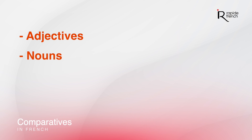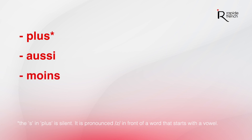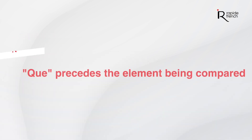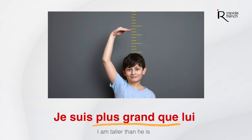Now, you should know that in French, you have the comparative with adjectives, with nouns, and with verbs. Terms that indicate greater, equal, and lesser in French are 'plus', 'aussi', and 'moins'. You should know that 'que' always precedes the elements being compared. In other words, the adjective is sandwiched by either plus, aussi, or moins and que. Let's have a concrete example.